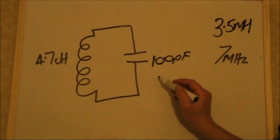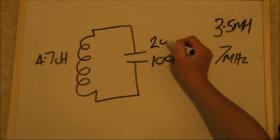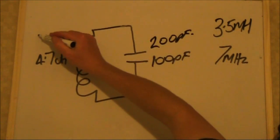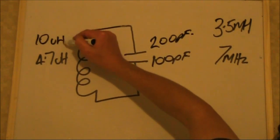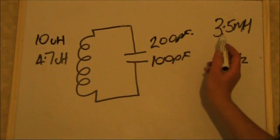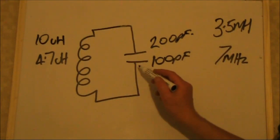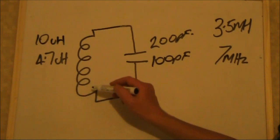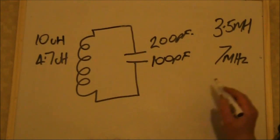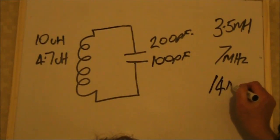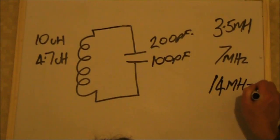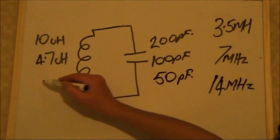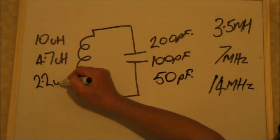In this case we need to double the capacitor's value and also double the inductor value. To decrease the resonant frequency, increase the capacitor and increase the coil value — that means adding more turns. And if we wanted a higher frequency band, like 14 MHz, in this case we halve the values: 50 picofarad and 2.2 µH.